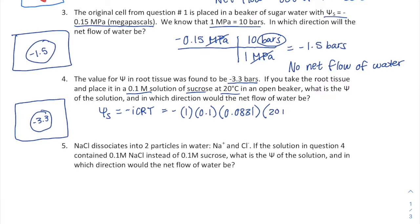You are allowed to use a calculator on the AP exam. After calculation and rounding, I get about negative 2.43 bars for the solute potential of the solution.